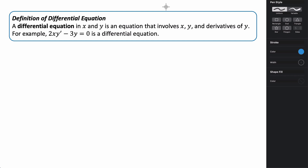In this video, we're going to be talking about something called differential equations and something called slope fields. A differential equation is an equation in terms of x and y, and it involves the variables x, y, and then derivatives of y — this can be first, second, third derivatives, and so on. So an example would be 2xy prime minus 3y equals 0. This is a differential equation: we have a derivative of y, and then the rest of the equation is in terms of x and y.